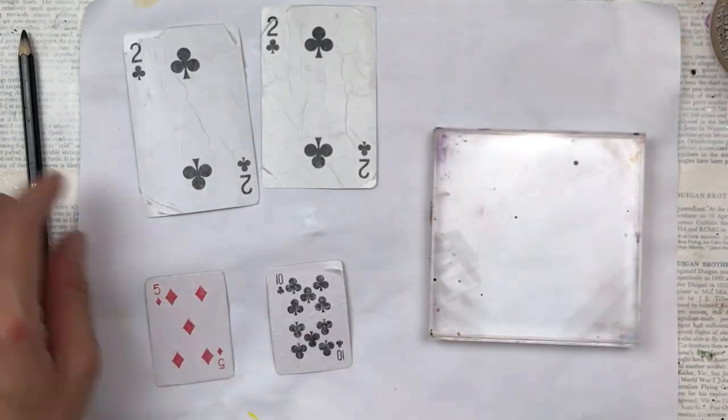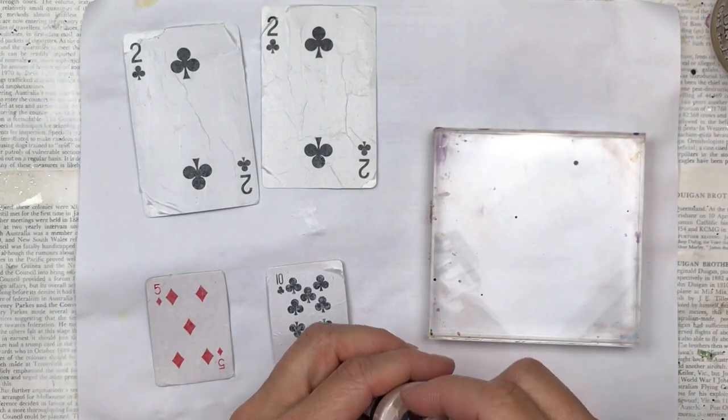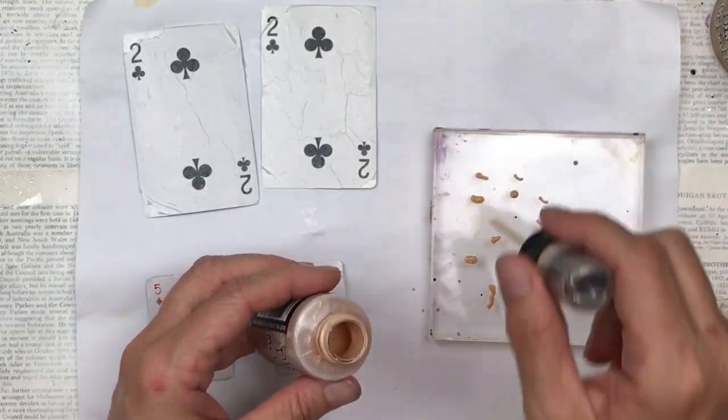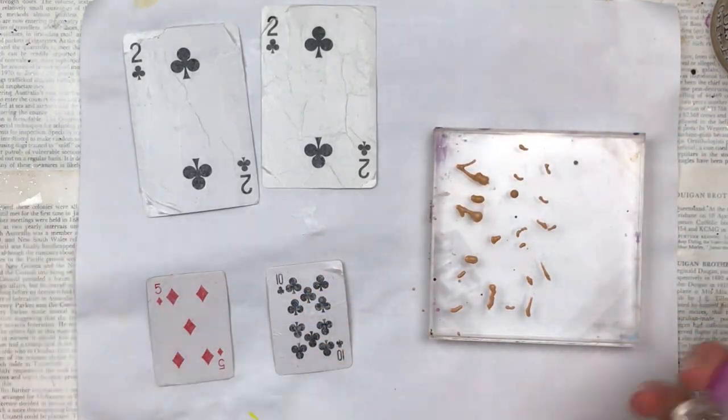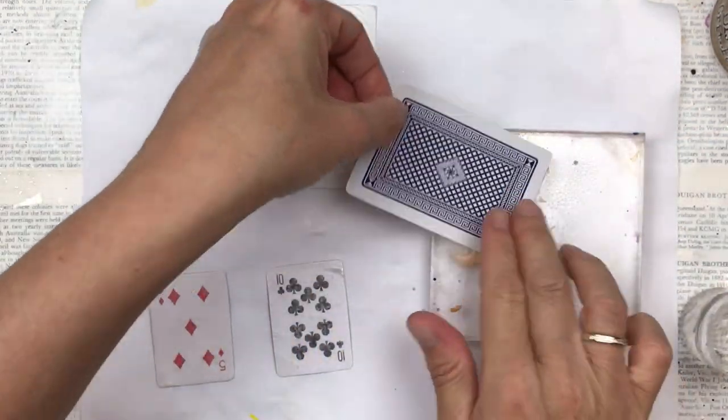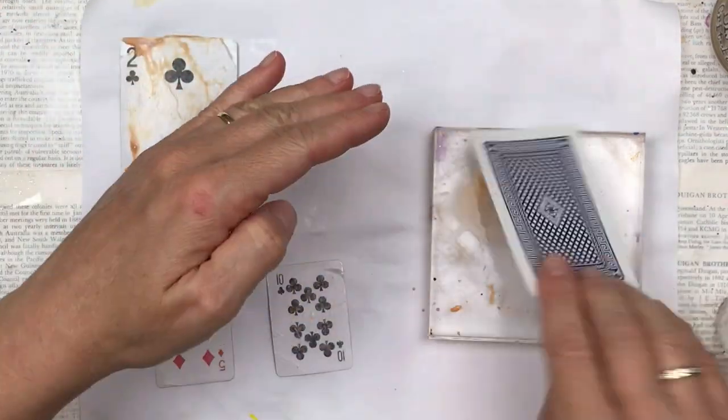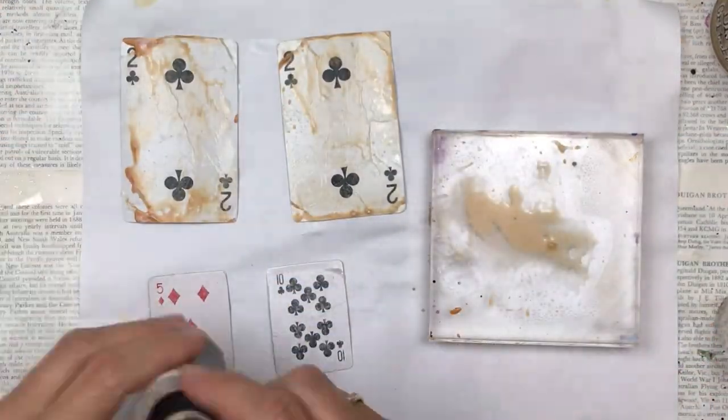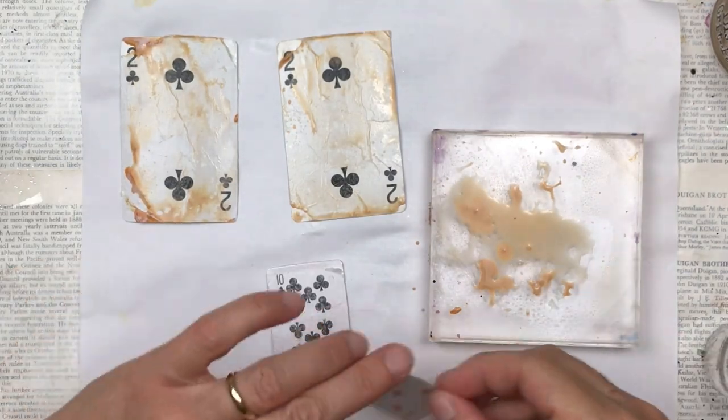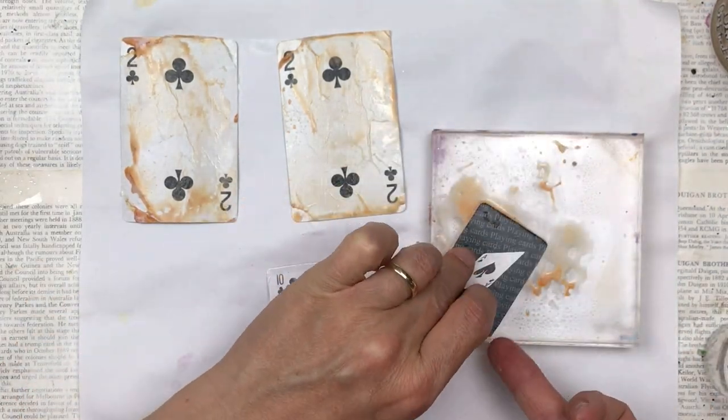The technique I'm using for adding the color is my smooshing technique with my acrylic block. I apply the ink - this color is called Tea Dye by Tim Holtz, it's an oxide ink. I apply a few drops onto the acrylic block, I spray with water, and then I smoosh the cards onto the wet ink.